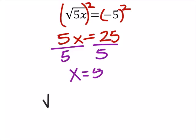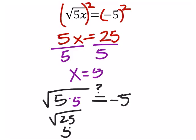But when we put it back into the expression, we got 5 times 5, and does this equal negative 5? Well, that's the square root of 25, which is just 5.